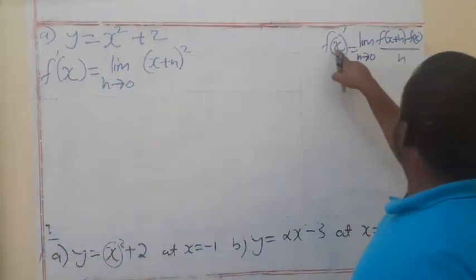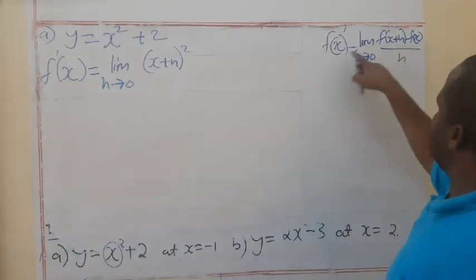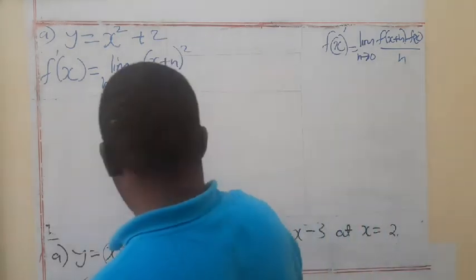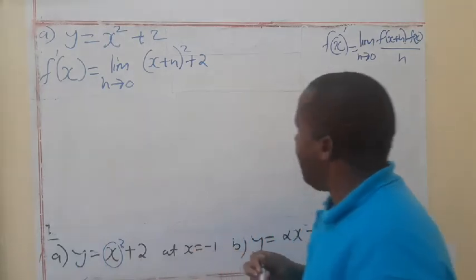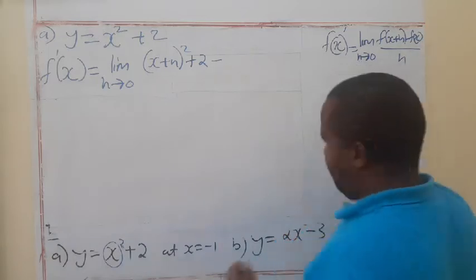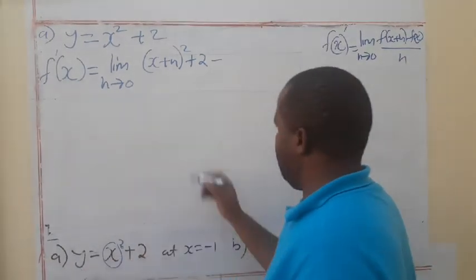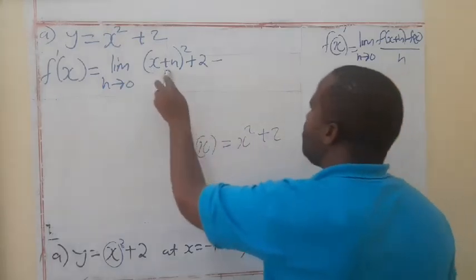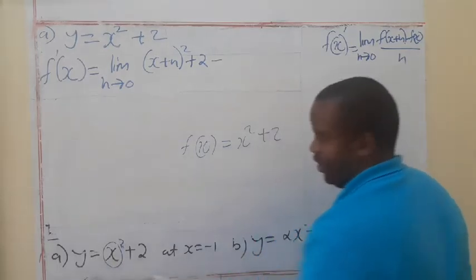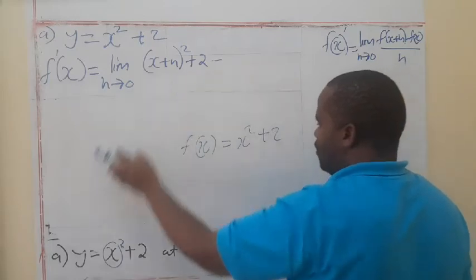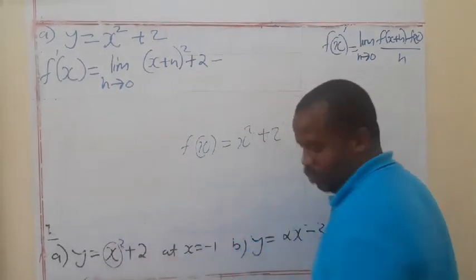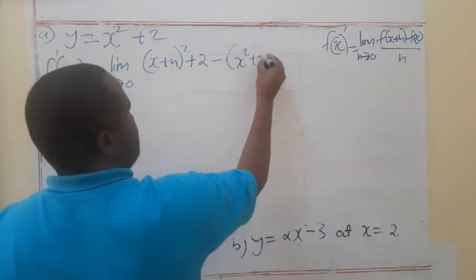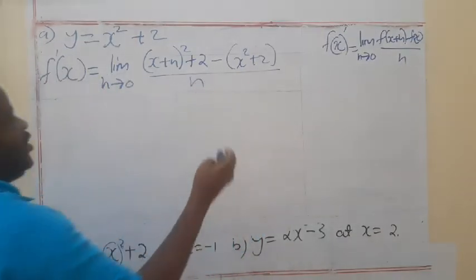This part is taking the place of F of X, but we have F of X plus H. So where there is X, you put X plus H. Then plus 2, because in the original function there is plus 2. Then we say minus F of X — F of X here means X squared plus 2. So we have minus X squared plus 2, and everything is divided by H.